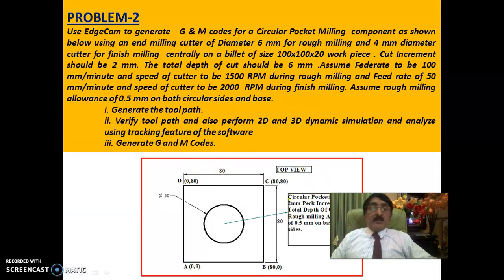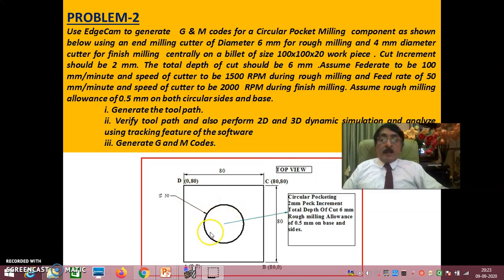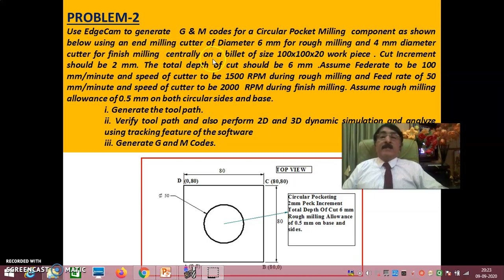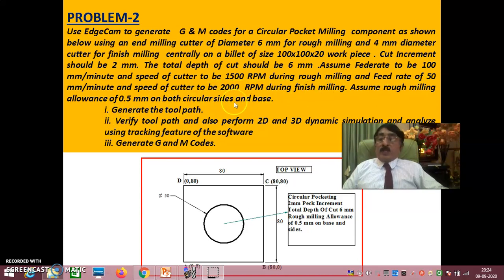The problem involves a circular profile where the entire material has to be removed. The diameter is 50mm and material is removed in steps of 2mm — first 2, next 4, next 6, and so on. Use Edgecam to generate G&M codes for a circular pocket milling component using a 6mm end mill for rough milling and a 4mm cutter for finish milling, with a billet size of 100×100×20. Cut increment is 2mm, total depth of cut is 6mm. Feed rate is 100mm/min and speed is 1500rpm during rough milling; feed rate 50mm/min and speed 2000rpm during finish milling. Roughing allowance is 0.5mm on both circular sides and base. Generate toolpath, verify toolpath, perform 2D and 3D dynamic simulation, and generate G&M codes.